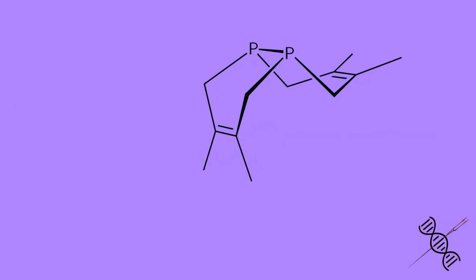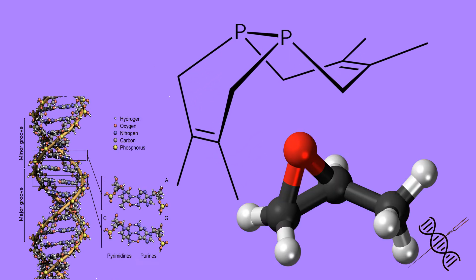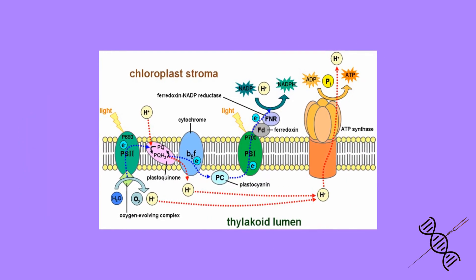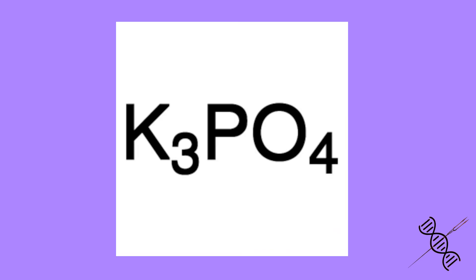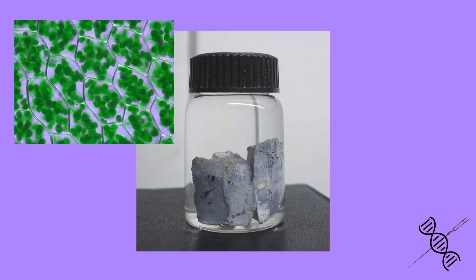For example, phosphorus influences plant's root growth; it is also a part of the DNA and ATP molecule. As a result, it has a huge importance during the process of photosynthesis. One of the sources of phosphorus in media is potassium phosphate. Next is potassium — an important chemical responsible for plant cell division and it helps during synthesis of proteins responsible for manufacturing chlorophyll molecules. Main sources of potassium are potassium nitrates.